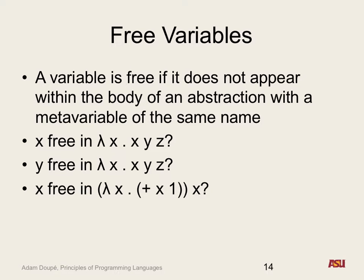Is X free in a more complex expression with nested lambda X's? The problem is there are two X's. The inner X is bound by the inner lambda X. But the outer X — the one not inside the body of any abstraction with meta variable X — is free. So you would circle the outer X but not the inner X as the free variable.